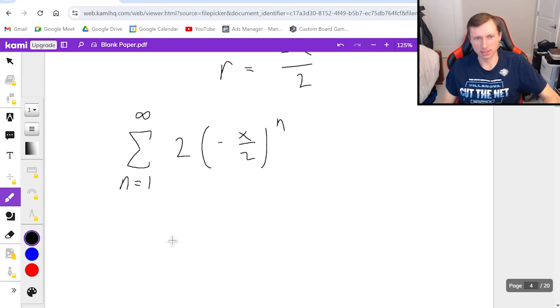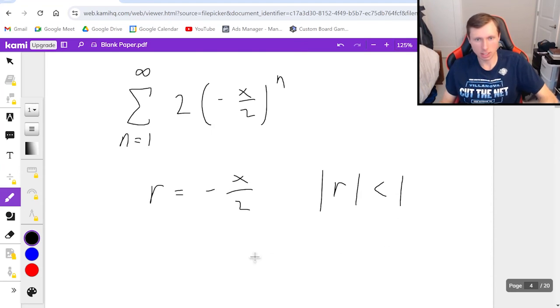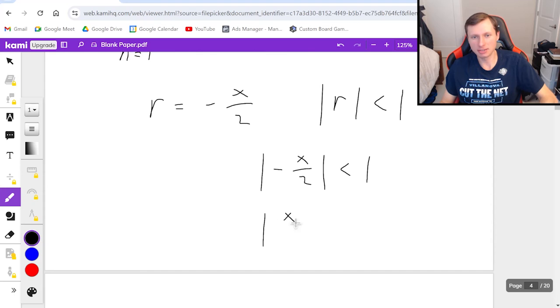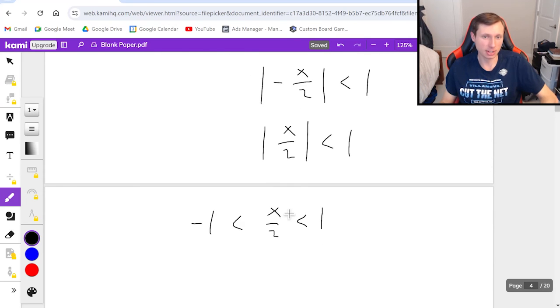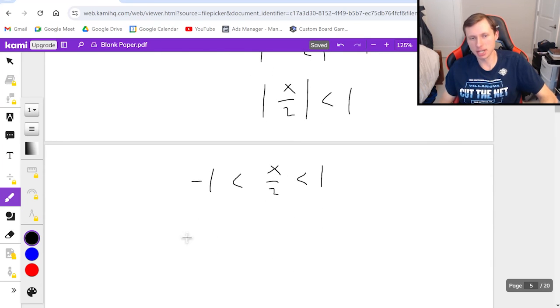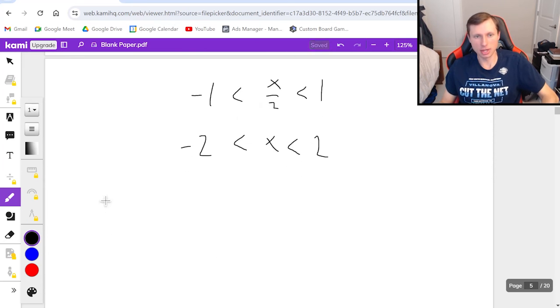So here's what we do. It's all about r, which is negative x over 2. I'm saying the absolute value of r has to be less than 1. So in other words, absolute value of negative x over 2, less than 1. Again, negative sign goes away because of the absolute value. And now I'm going to sandwich it between negative 1 and positive 1 to get rid of the absolute value. And finally, I'm going to multiply both sides by 2. Negative 2, less than x, less than positive 2.